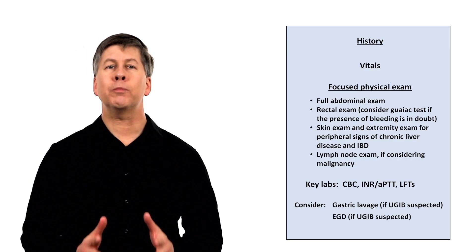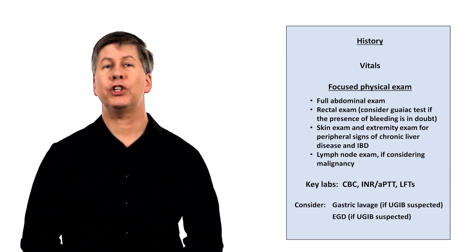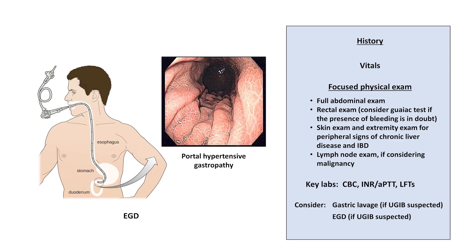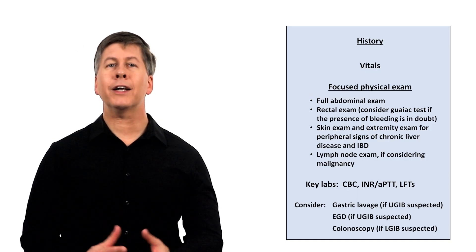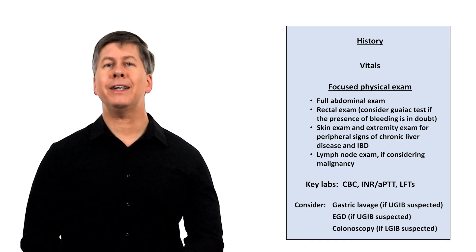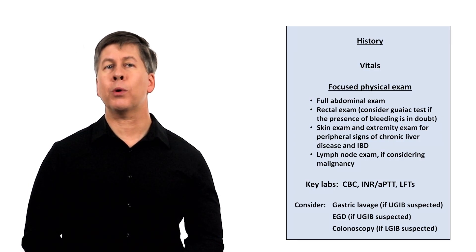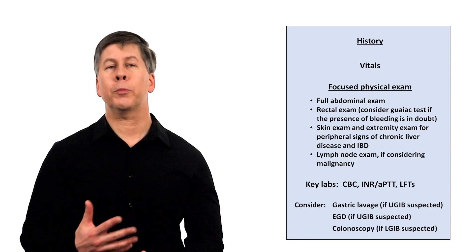Now let's talk about a much more common and important procedure: the EGD. An EGD is an endoscopic procedure where a thin, flexible camera is introduced into the patient's mouth and advanced downward through the GI tract, usually to the second or third portion of the duodenum. The acronym stands for esophagogastroduodenoscopy. A colonoscopy is indicated if a lower GI source is suspected — it is analogous to an EGD, but the scope is introduced through the anus and advanced proximally, usually to either the cecum or the terminal ileum.